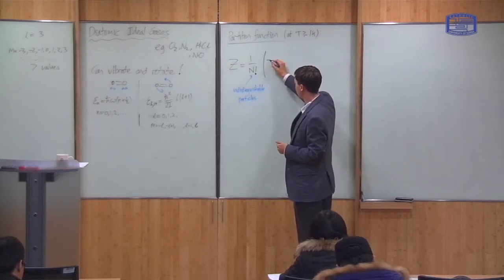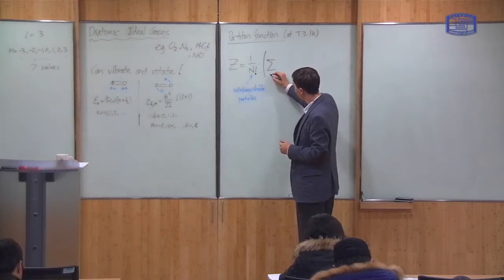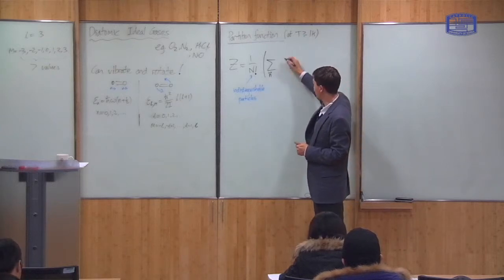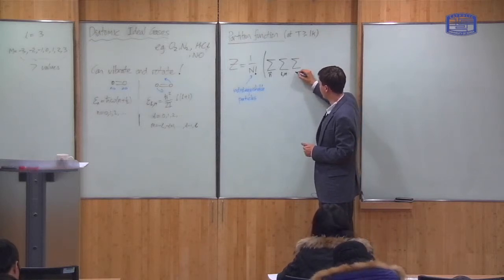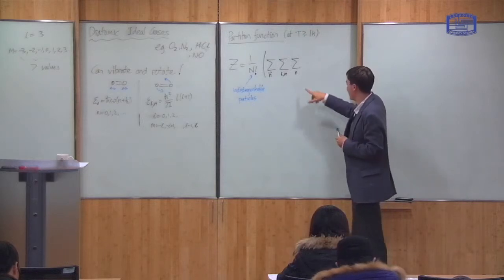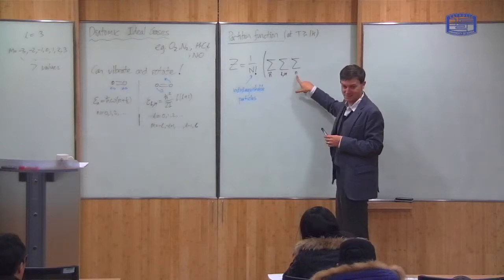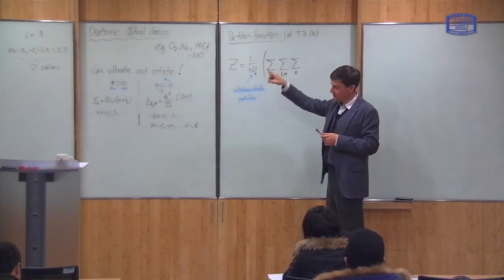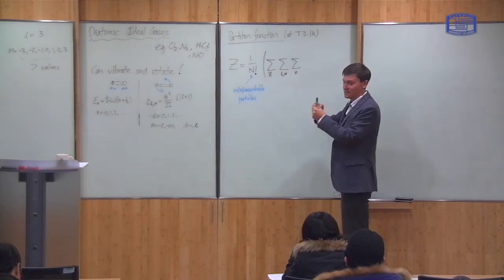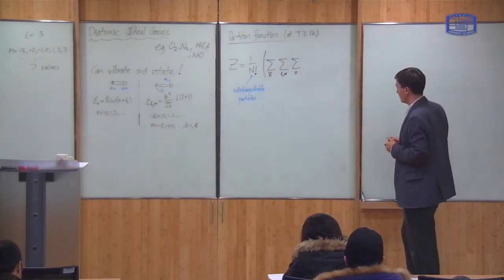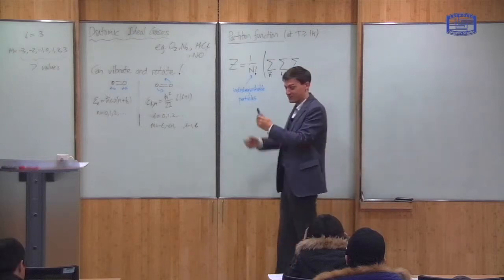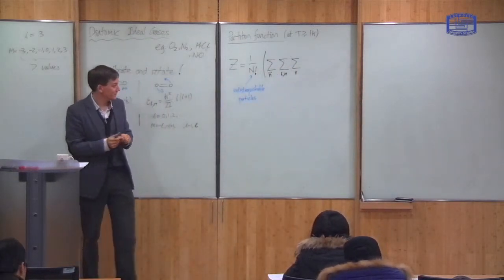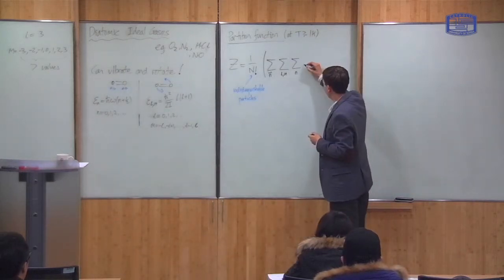There are three sums in the partition function. There's the sum over the translational part, which depends upon the vector N. Then there's the sum over the rotational part, which depends upon L and M. And then there's the sum over the vibrational part, which depends upon the scalar n. Note: this vector N is not the same as this scalar n. The vector N labels the translational kinetic energy, and the scalar n labels the vibrational energy. This is a sum over all possible states — a particle can move and rotate and vibrate all at the same time.